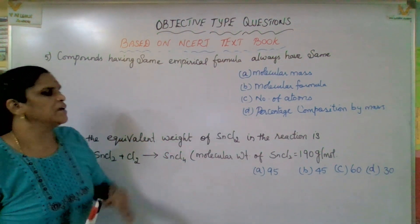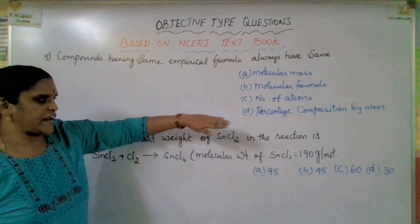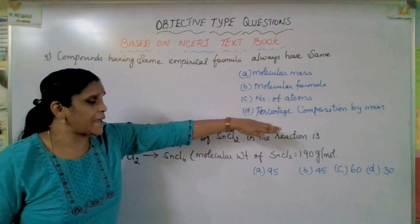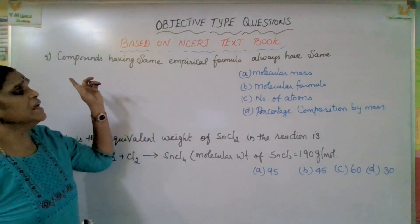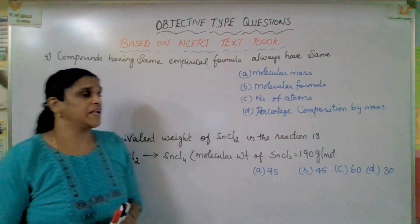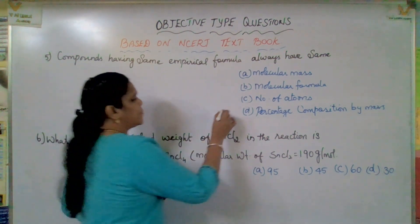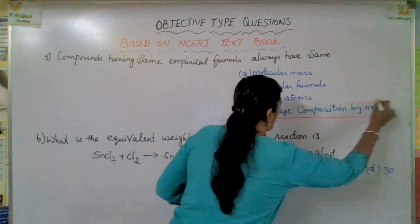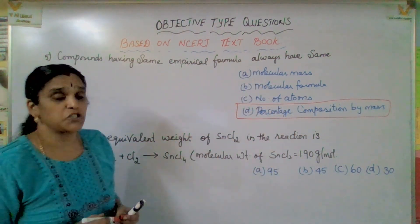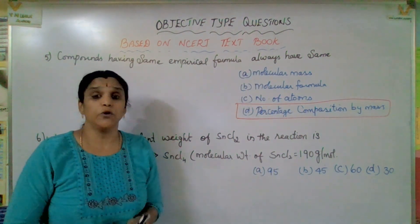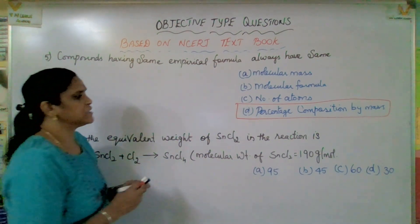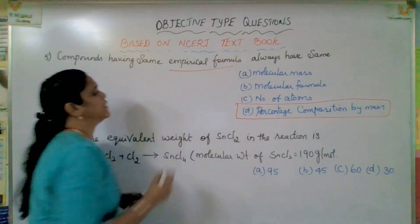In this question, the correct option is percentage composition by mass. Why? Because the empirical formula is also known through percentage composition by mass — the percentage composition of a compound can be used to derive the empirical formula. So that is the exact answer.